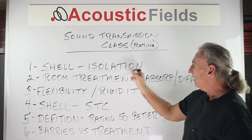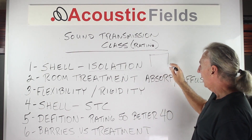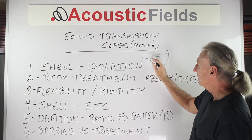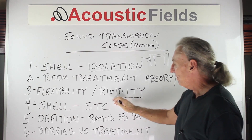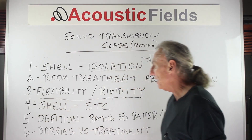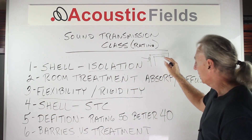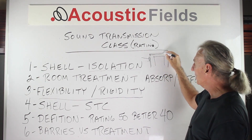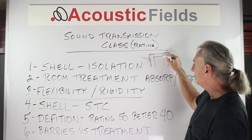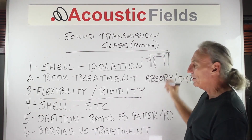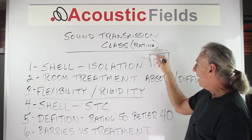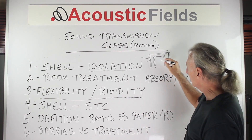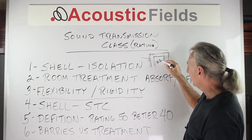So the shell — if we have a room within a room — has to have a flexibility and rigidity ratio relative to the room inside of it. There has to be a certain balance between the materials we use in our shell and the materials we use in our room. That balance between those materials is critical to the sound quality that goes on inside our room.